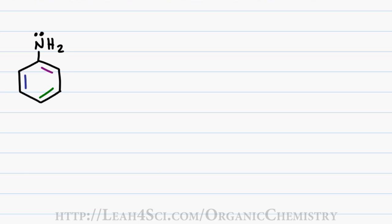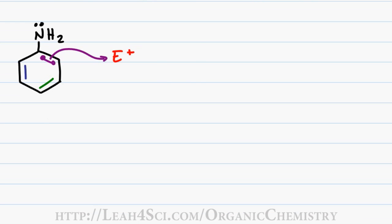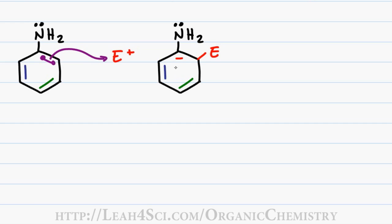Let's go through the mechanism overview. If we're adding a super electrophile to the ortho position of this aniline — NH2 on benzene — we get an intermediate that has a positive charge capable of resonating in the ring. This is one of the resonance structures, but when we resonate it throughout the ring, just imagine we have the positive dispersed and resonating throughout.